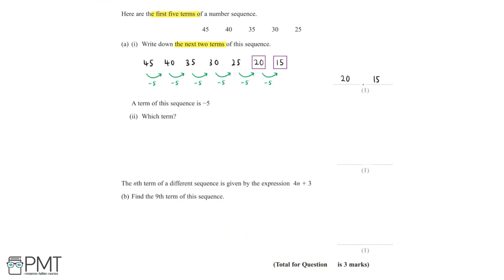We're then told that a term of the sequence is -5. And in part A(ii), we need to find out which term this is. Now using the information given to us in the question and our answer to part A(i), we know that the 5th, 6th and 7th terms of the sequence are 25, 20 and 15.